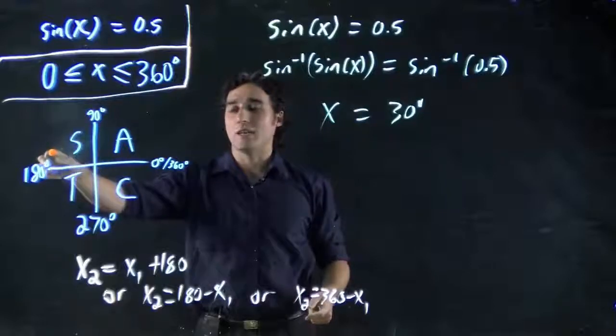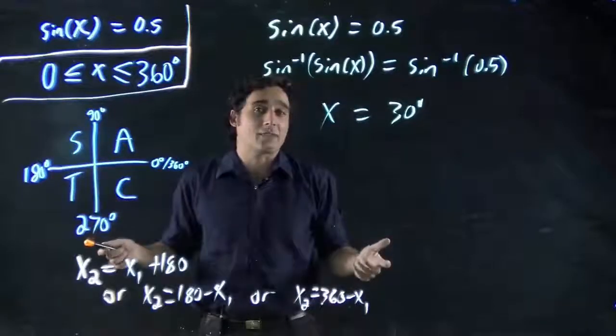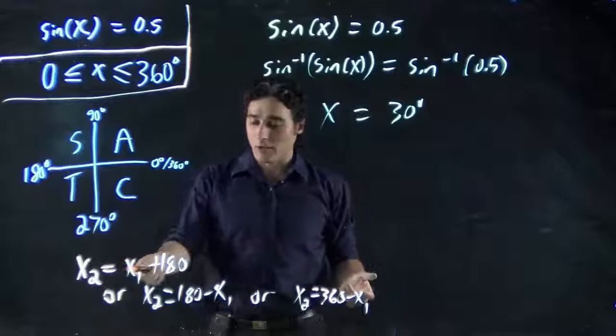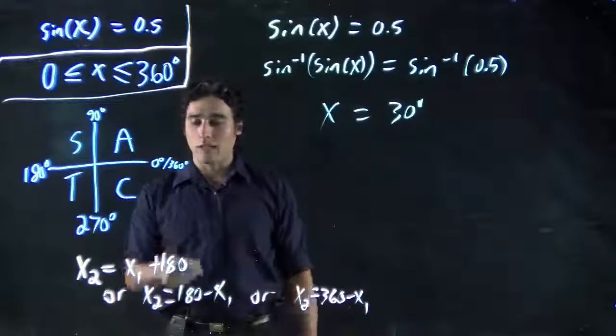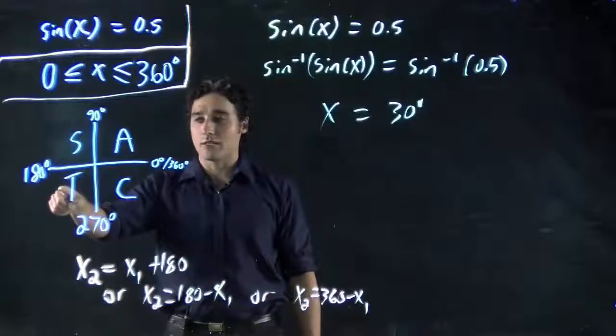Our answer must be between 90 and 180, our second one, if there is a second one that exists. So we look at these three cases. Which one would work out? 30 plus 180. Well, that would put me into this region. Sign's not positive there.